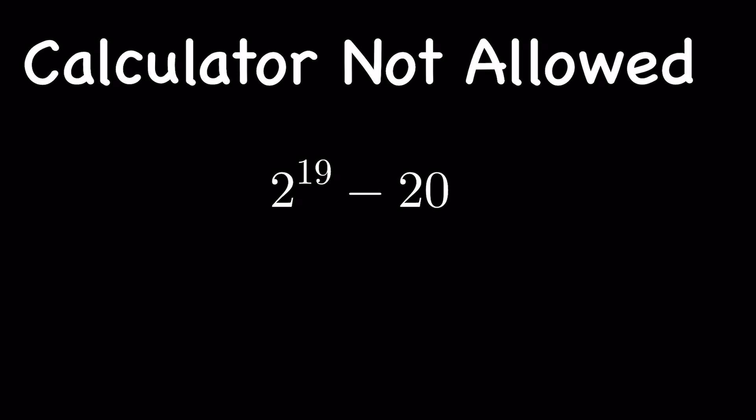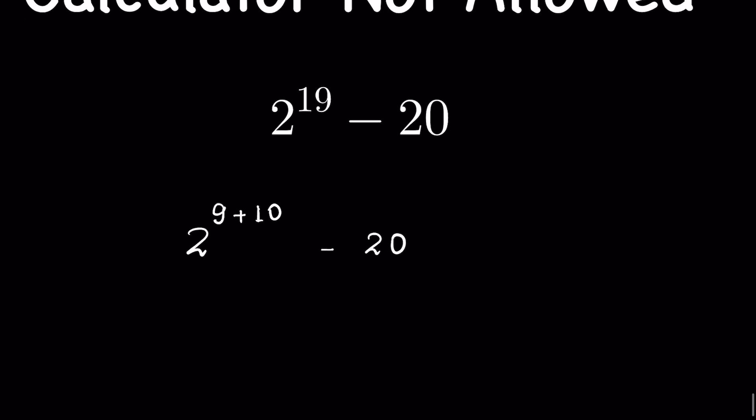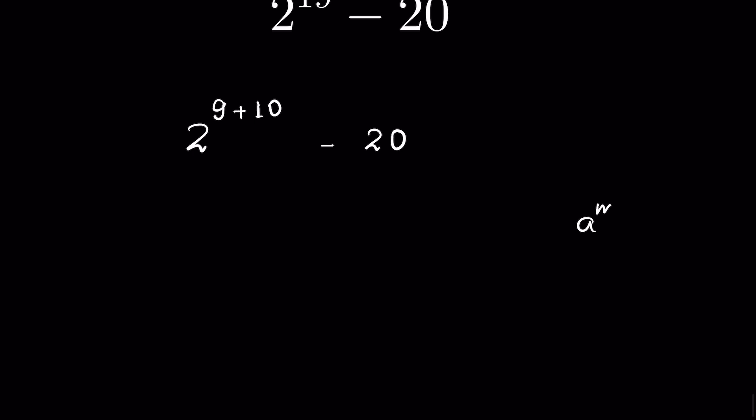2 to the power 19 minus 20, we have to evaluate this without using a calculator. Let's try. 2 to the power 19 we can write as 2 to the power 9 plus 10 minus 20. When a to the power m plus n, this is equal to a to the power m times a to the power n.